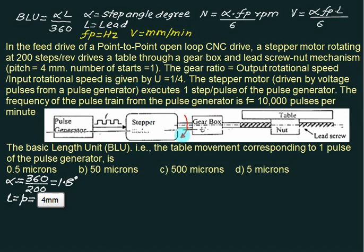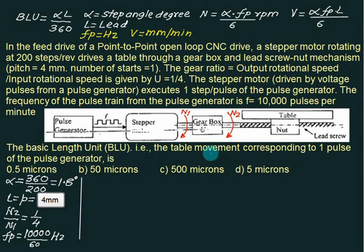This one is input shaft and this one is output shaft. So this one is n1 and let's say n2. So we are given n2 by n1 equals 1 by 4. The frequency of pulse train, the pulse generator is 10,000 pulses per minute. We want to calculate the basic unit length, the table movement corresponding to one pulse of the generator. The choices are 0.5, 50 micron, 500, or 5 micron.